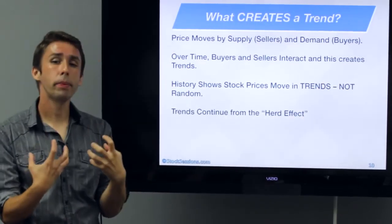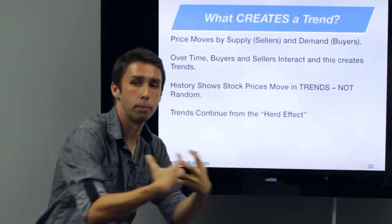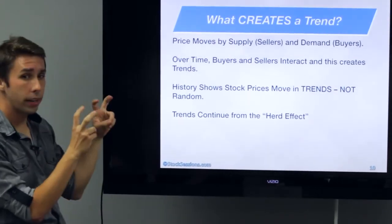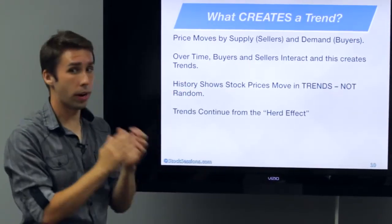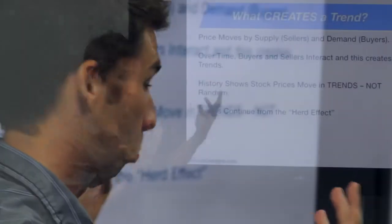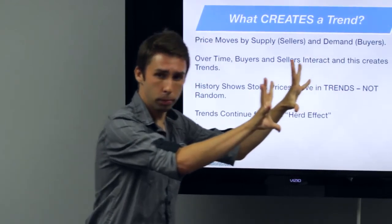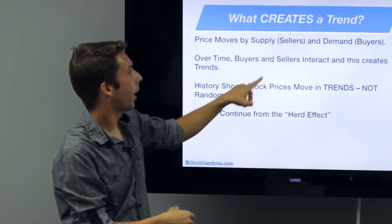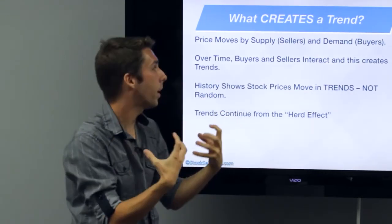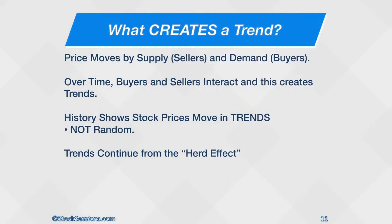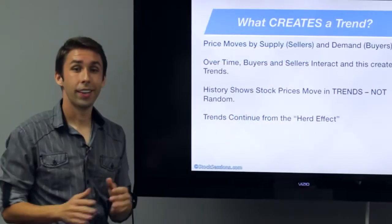Over time, good companies tend to get better and tend to attract money. What did we mention earlier about the bandwagon effect? People tell their friends, 'I'm in Chipotle, you should be in Chipotle too.' They go and they buy Chipotle, or Apple, or Microsoft, or Google. So that kind of fuels this feedback loop — just another word for higher prices creating happiness, happy buyers, telling more people, so the stock trends higher. Price moves in trends. It's not random, and for the most part it's driven by the herd effect.